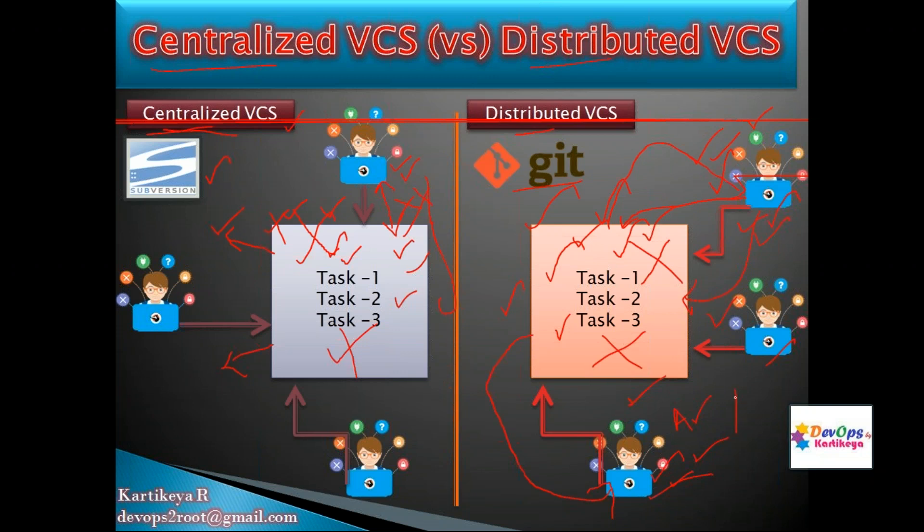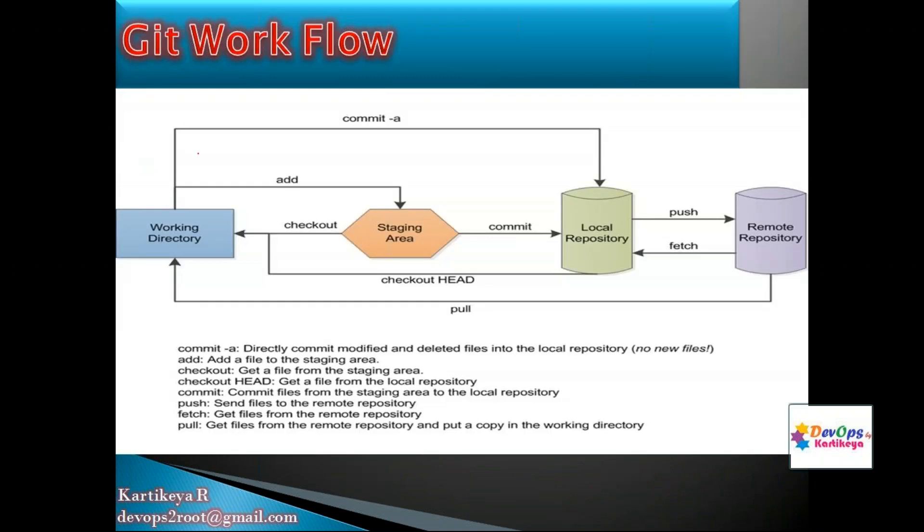That's why we call it a distributed version control system. You don't need the communication channel to be always established. You can work locally, make changes, and when the network is available, push your changes to the distributed repository. Even without 24/7 internet connection, you can work offline and push changes later when connected.